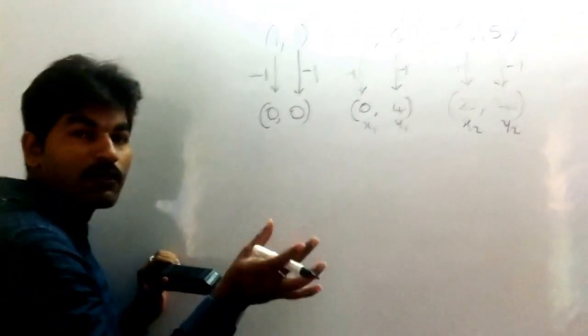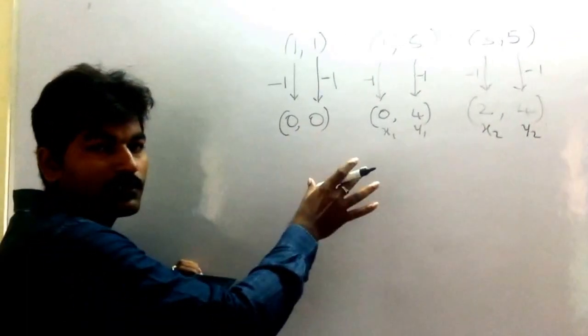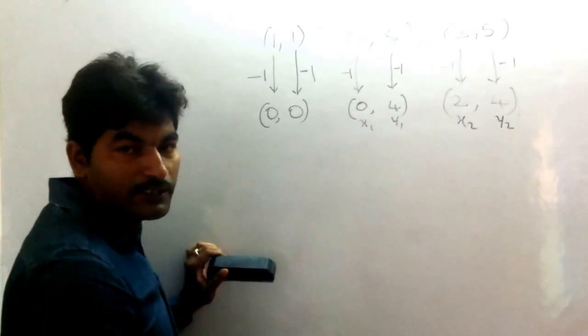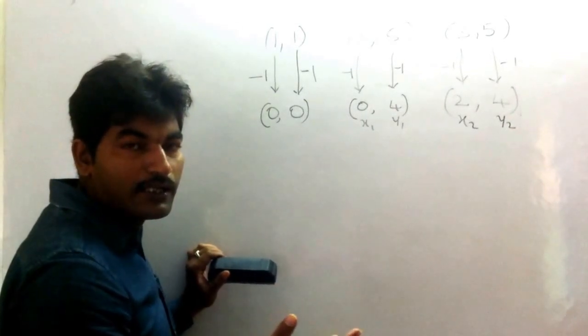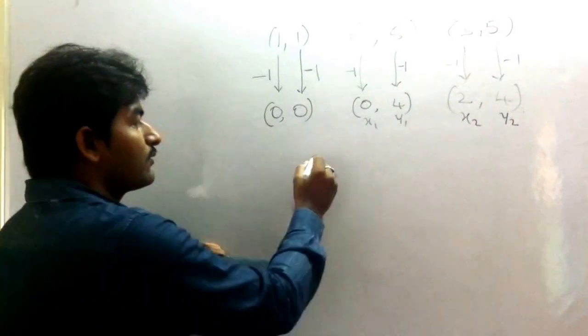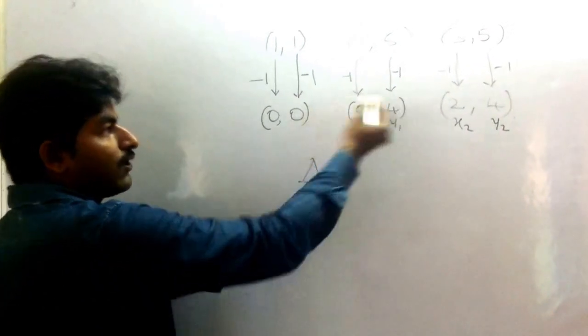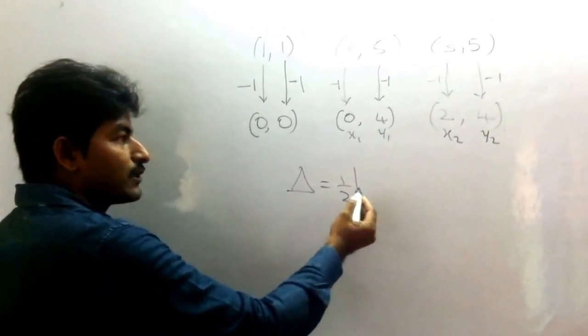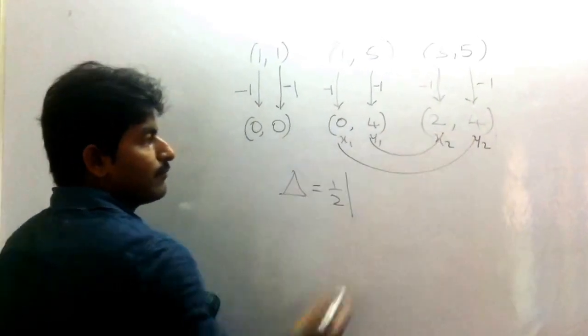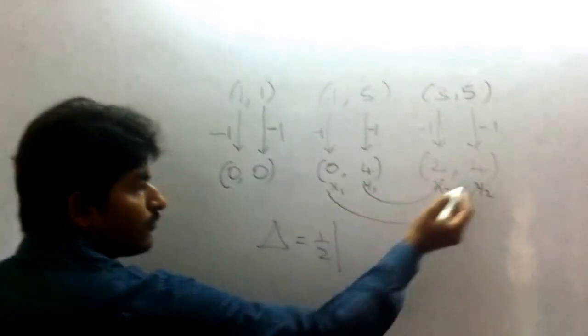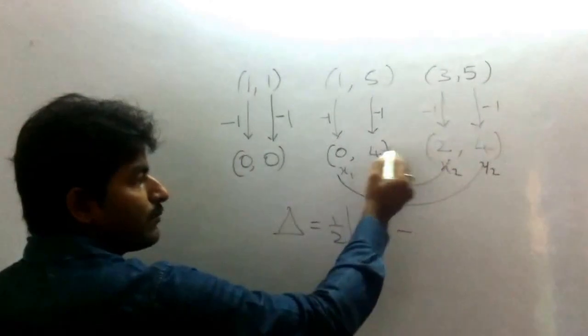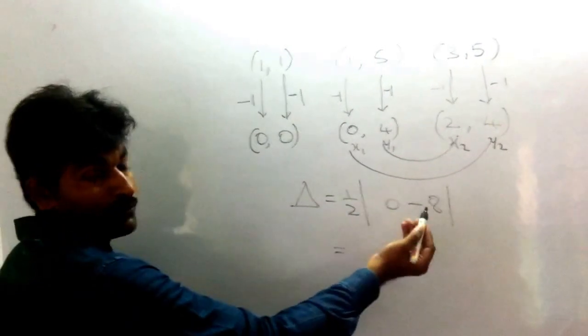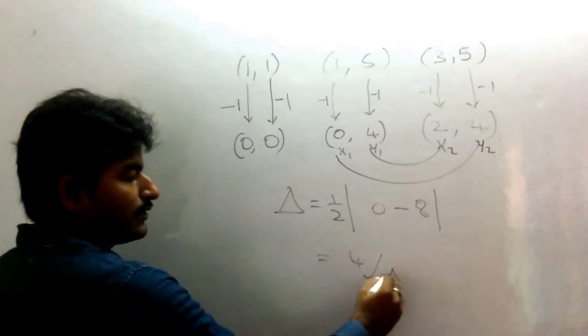And you know that when one of the vertices is at the origin in a triangle, and you're asked to find the area of that triangle, then we use the result Δ = ½|x₁y₂ - x₂y₁|. So now, area of this triangle with points (0,0), (0,4), and (2,4) equals ½ - multiply crosswise. Zero into four is zero, minus four times two is eight. So ½|−8| is ½ × 8, which is 4. This is the answer.